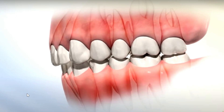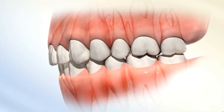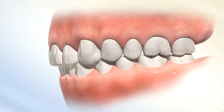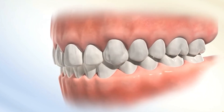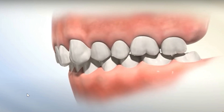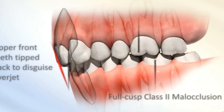Overbite. It is defined as vertical overlap of the incisors. Normal overbite is 2-3 mm, while increased or deep bite is more than 3 mm. This is known as deep bite.